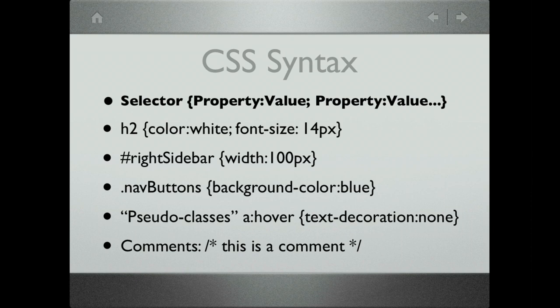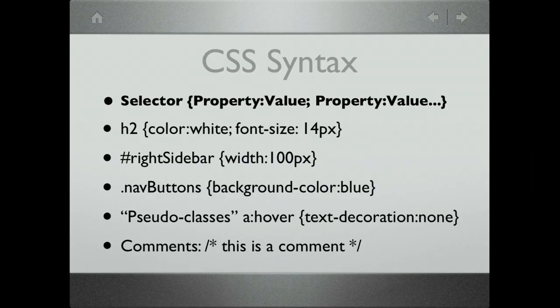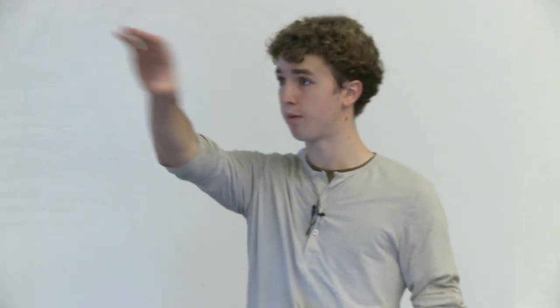Similar to IDs, but importantly different, are classes. We access classes with a dot or period. So '.nav-button' says give me all elements with a class of nav-button and set their background color to blue. An ID is used on just a single element — like one right-sidebar. A class is used when you have multiple elements styled the same way, like navigation buttons, where you want to style all of them with the same properties.